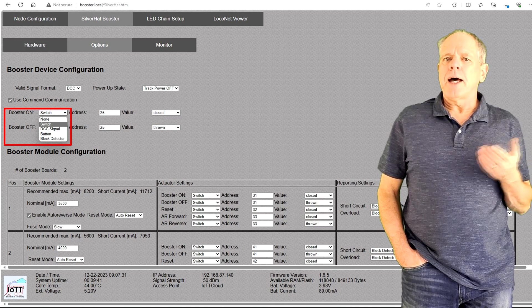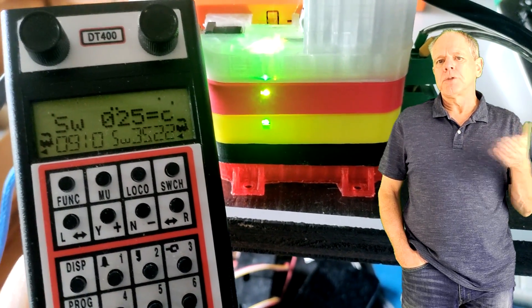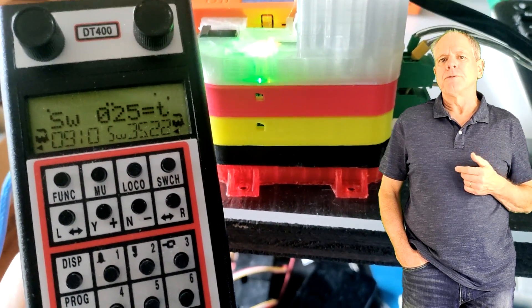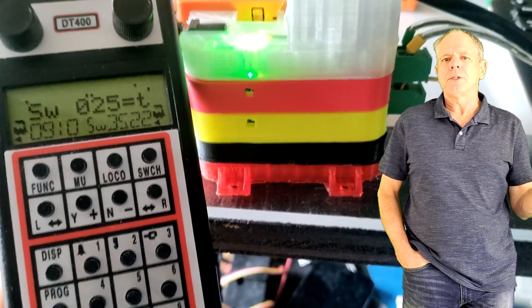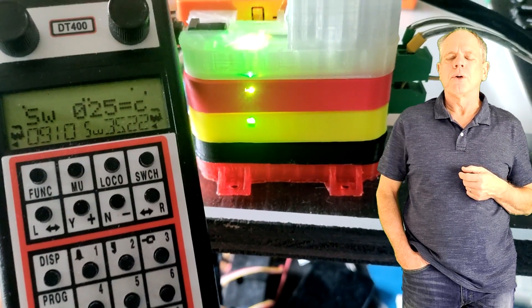In the example shown, I use turnout 25 to switch the track power ON and OFF, so the booster reacts from commands entered in my throttle and turns all track outputs ON or OFF.